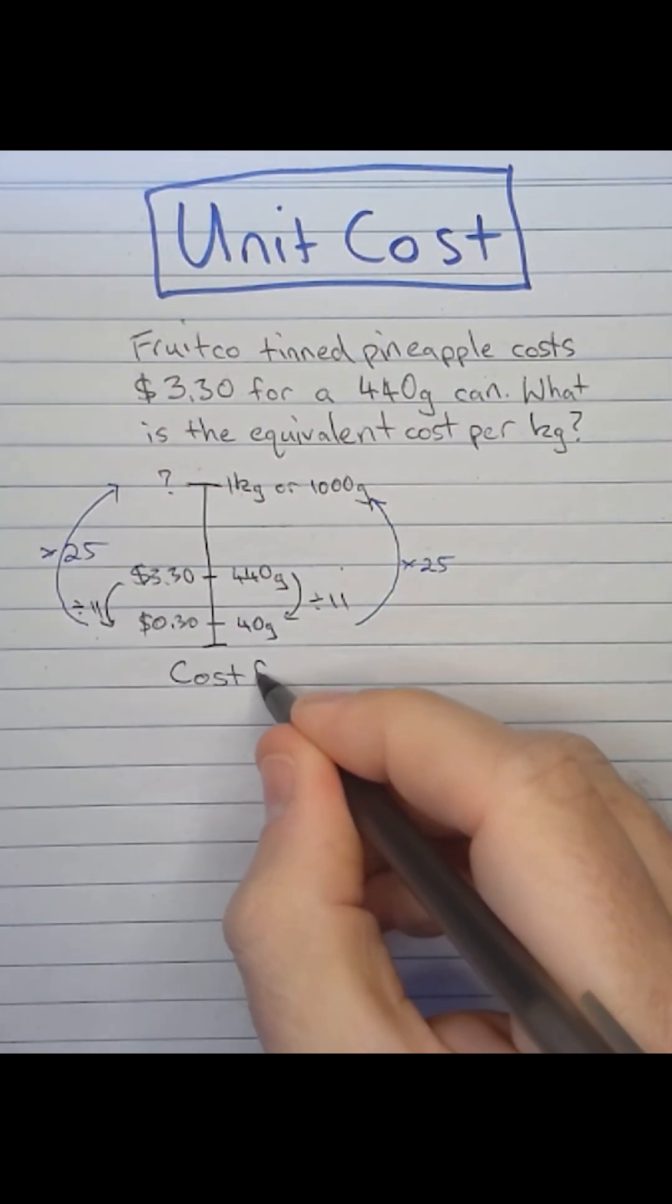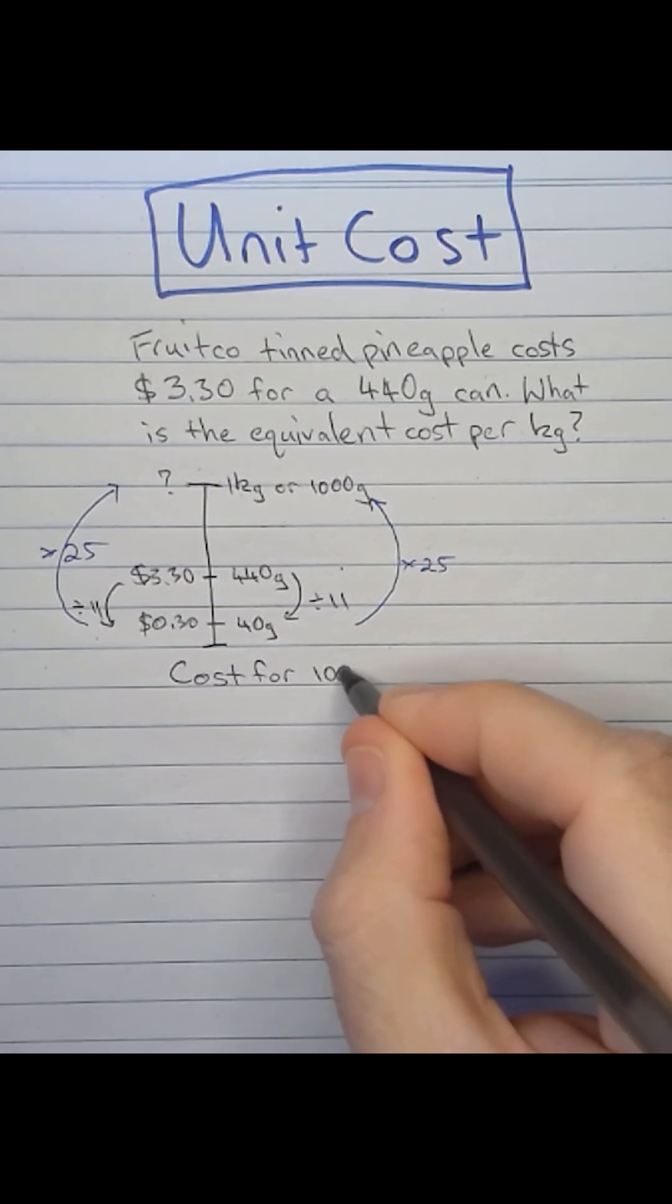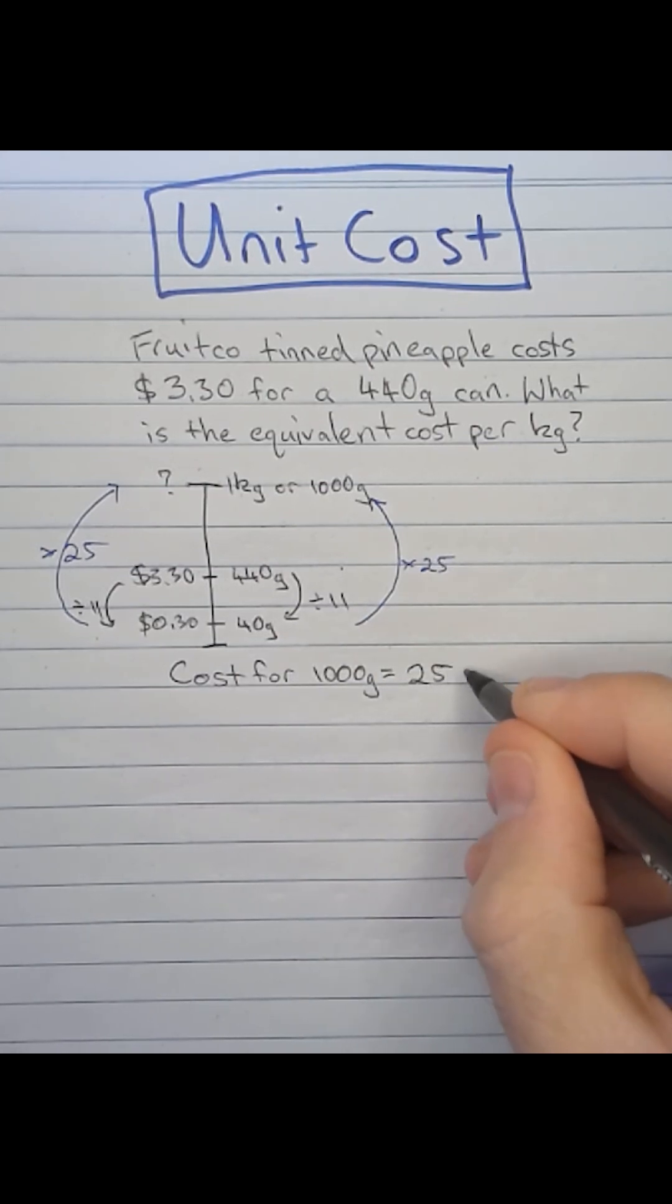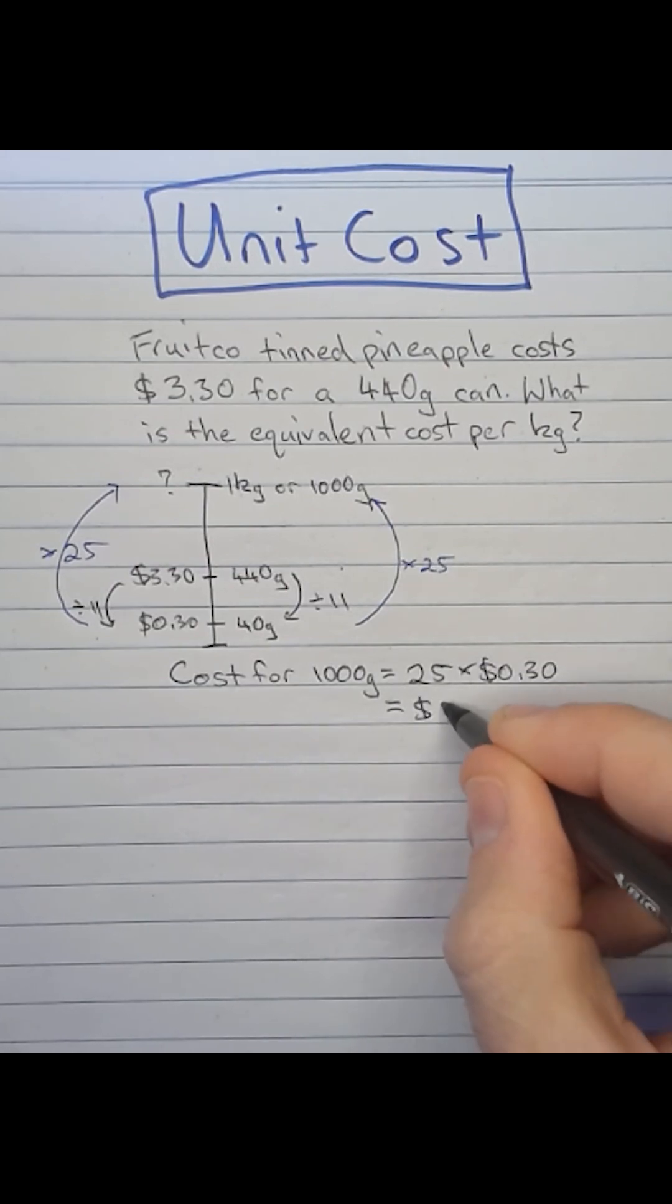So cost for 1000 grams is going to be 25 multiplied by $0.30 which is going to be $7.50.